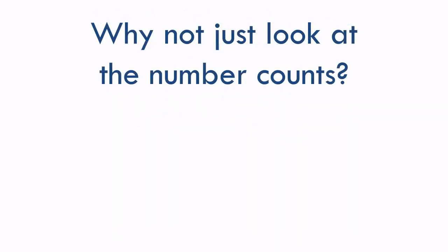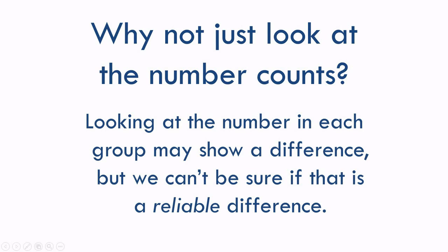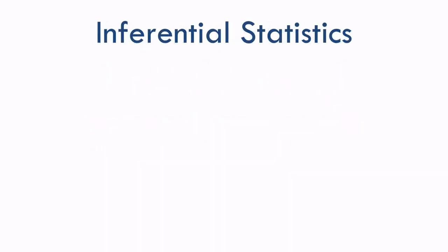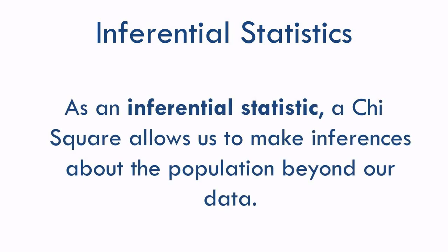So why not just look at the counts and see if they differ? The problem with that is we wouldn't know if a difference was just due to chance or if it's reliable. In other words, would we expect to see the same result if we did this again? This is the whole purpose of inferential statistics. They tell us how likely a pattern is to hold in the wider population, beyond just the data in our sample. A chi-square is not just telling us about the data we have, but the population of data we don't have.